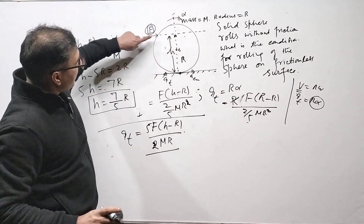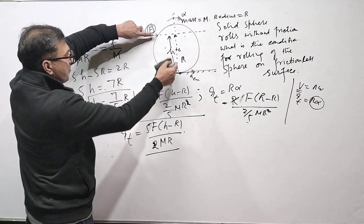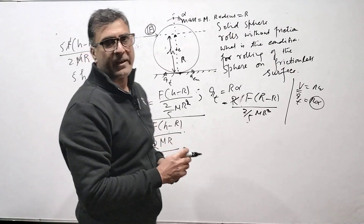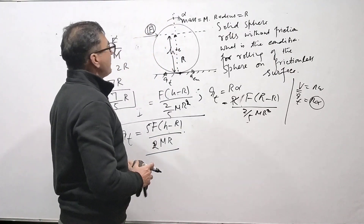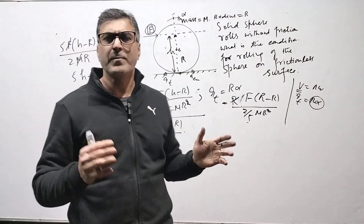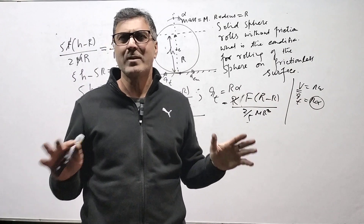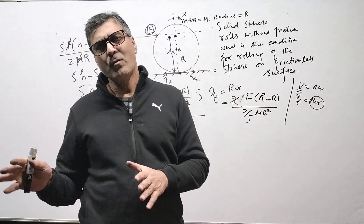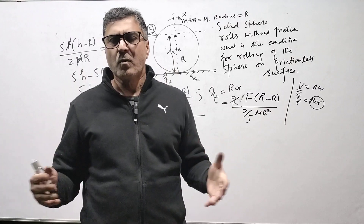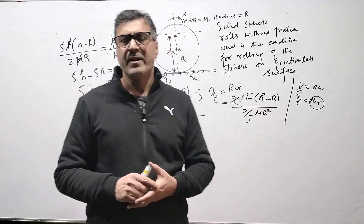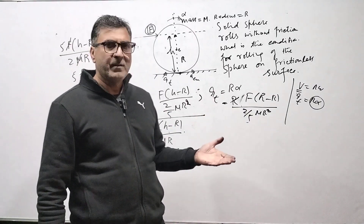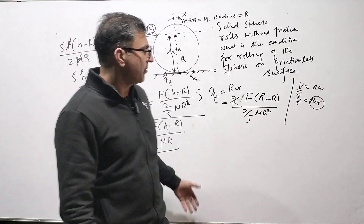So if the force is applied at h = 7R/5, rolling is caused without friction. These were the five problems solved today. Continue practicing with objectives and problems, and try downloading the physics app from the Google Play Store — you will get a lot of study material there. Thank you.